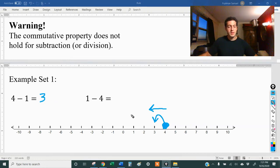So four minus one is three. But what is one minus four? That means we're starting on one and we're moving to the left four spaces: one, two, three, four. This time we get negative three.